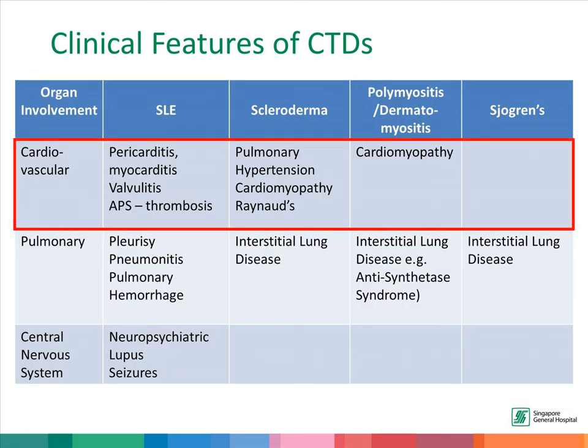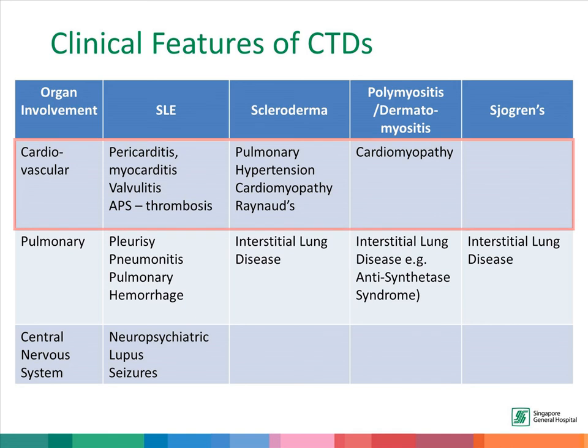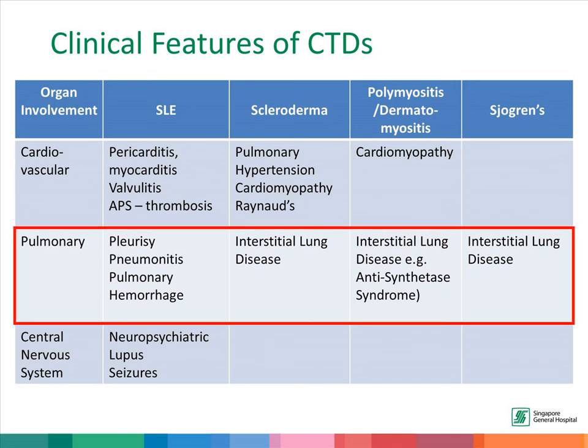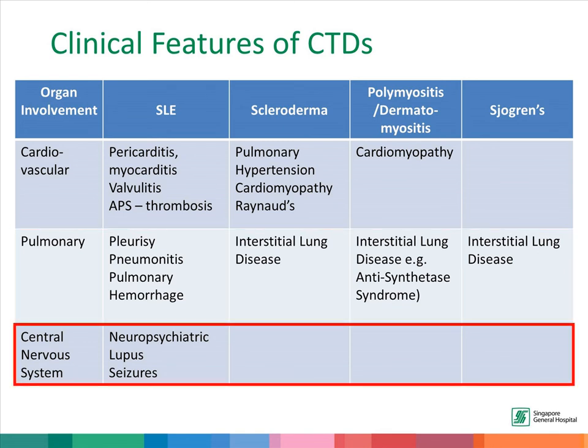The heart may be involved in SLE, where there is pericarditis, myocarditis, or valvulitis. In scleroderma, the prominent feature is pulmonary hypertension, and cardiomyopathy may also be present. In polymyositis, patients may have cardiomyopathy. For pulmonary involvement, in SLE the patient may have pleurisy, pneumonitis, or even pulmonary hemorrhage. In scleroderma, polymyositis, and also in Sjogren's, the patient may have interstitial lung disease.